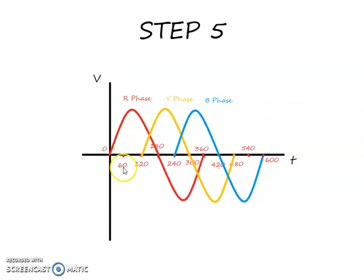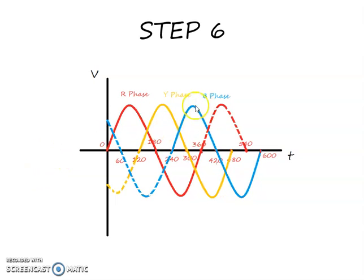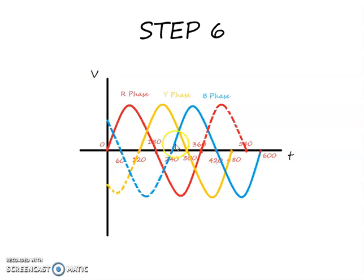This is how you draw a three-phase waveform. In the next step all the waveforms are extended backwards. The Y-phase waveform is extended backwards from 120 degrees to the negative peak. The B-phase has been extended, and the R-phase goes from 360 to 540. The B-phase is taken back from 240 to a negative peak and extended to the positive side.